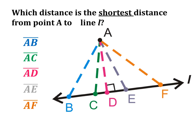Let's take a look at this situation. Which distance do you think is the shortest distance from point A to line F? We've got distance from A to B, A to C, A to D, A to E, A to F. It doesn't matter what point you pick on a line — the keyword is shortest distance from a point to a line. Hopefully you chose line segment AD. This will always be the shortest distance from a point to a line — the one that is perpendicular.